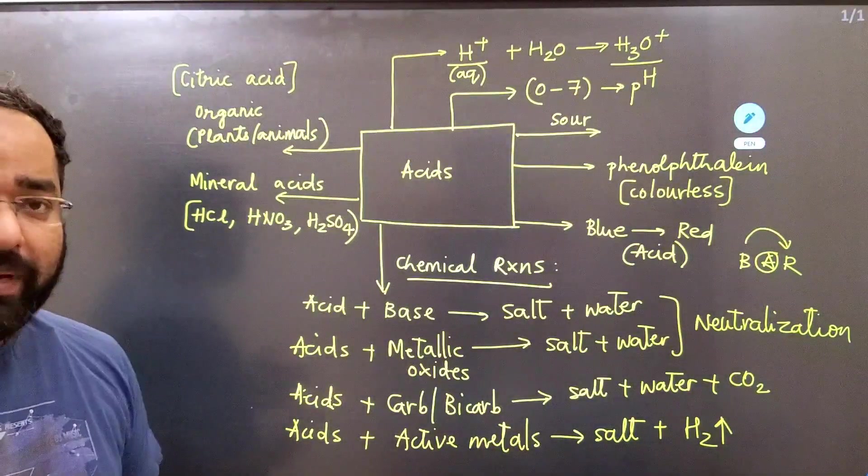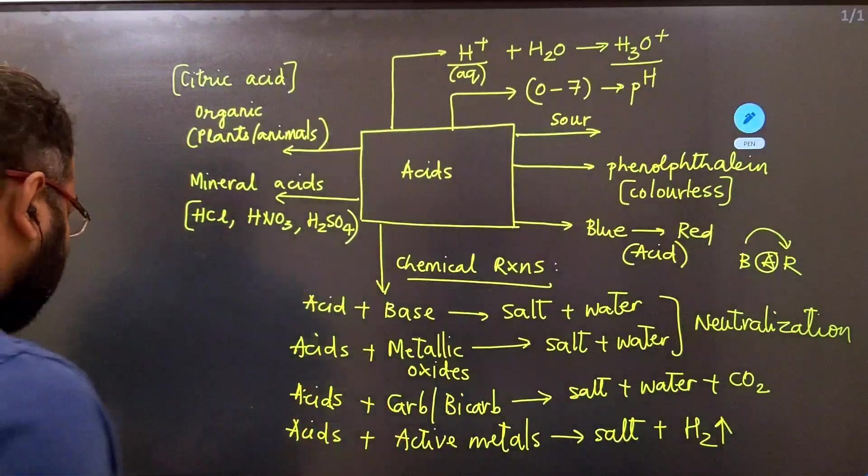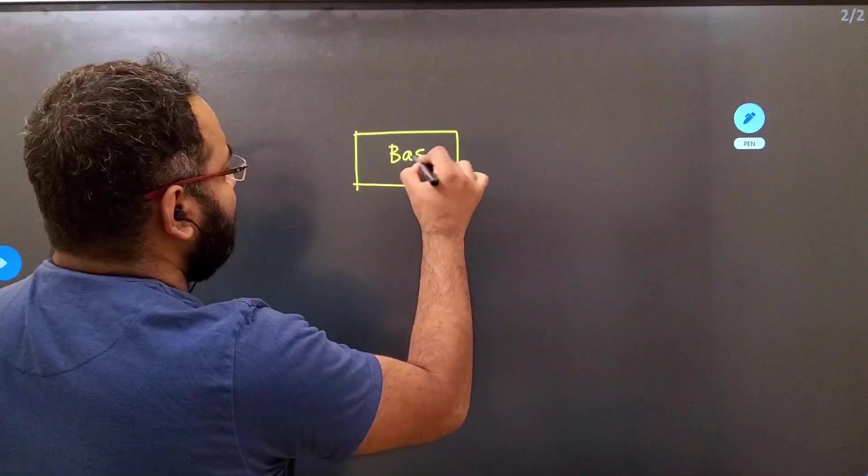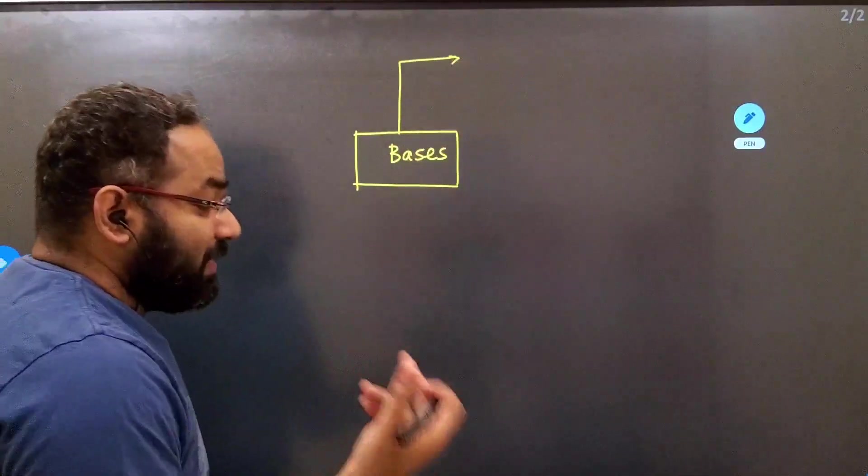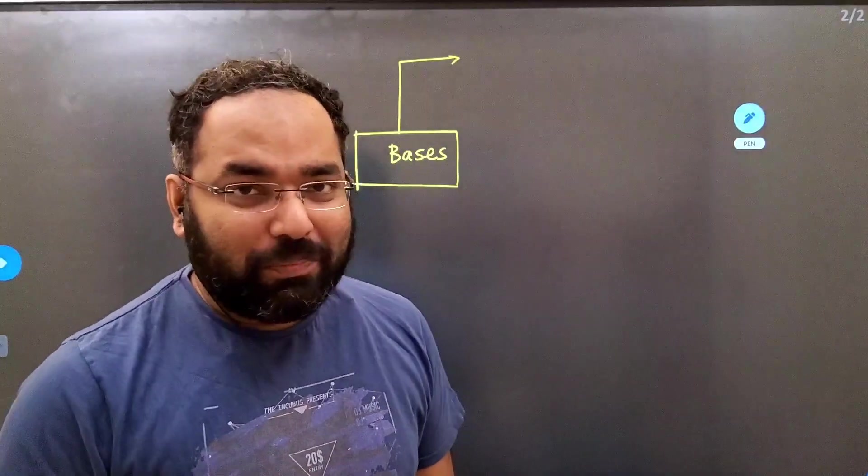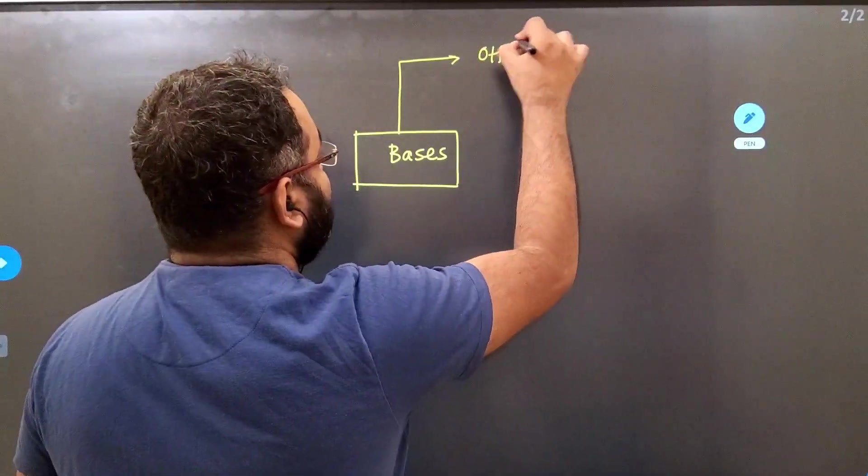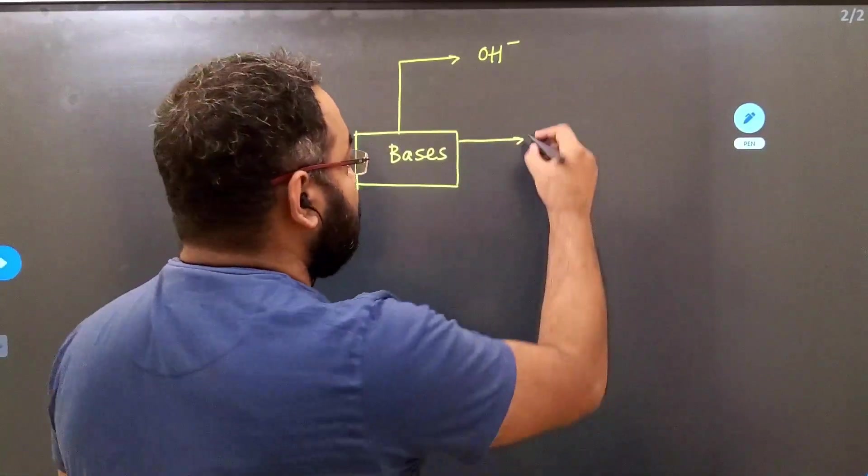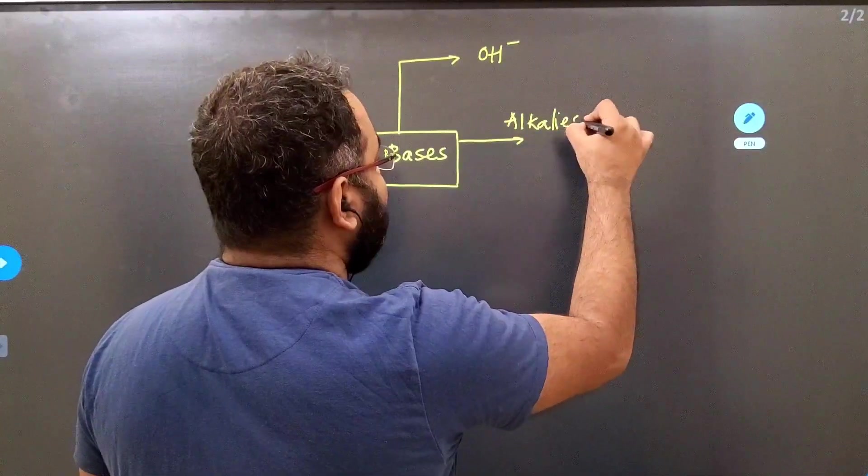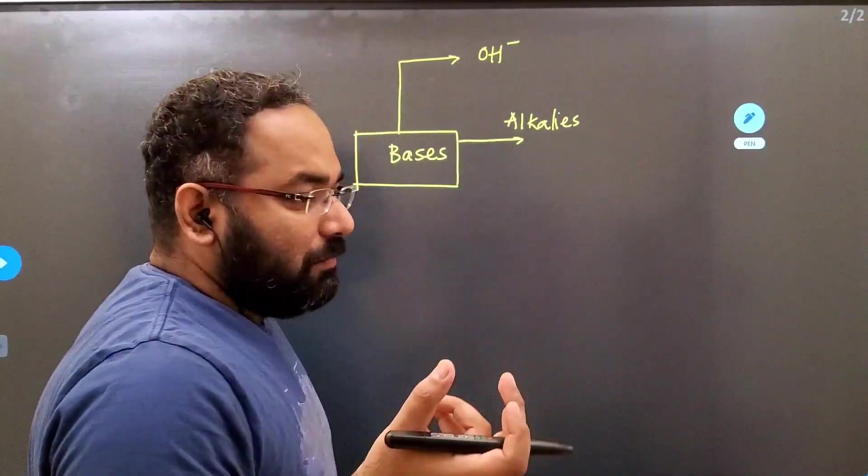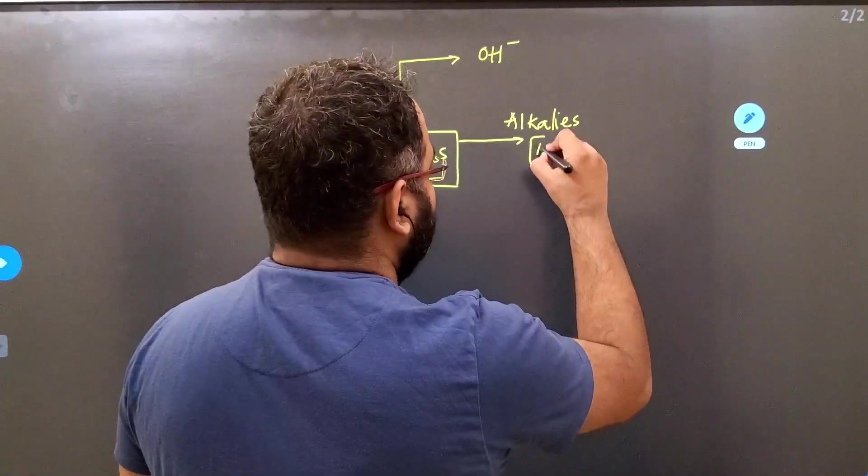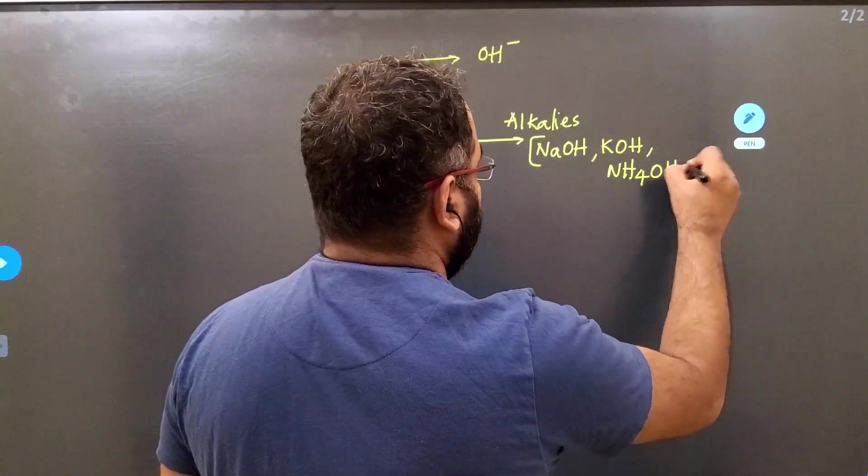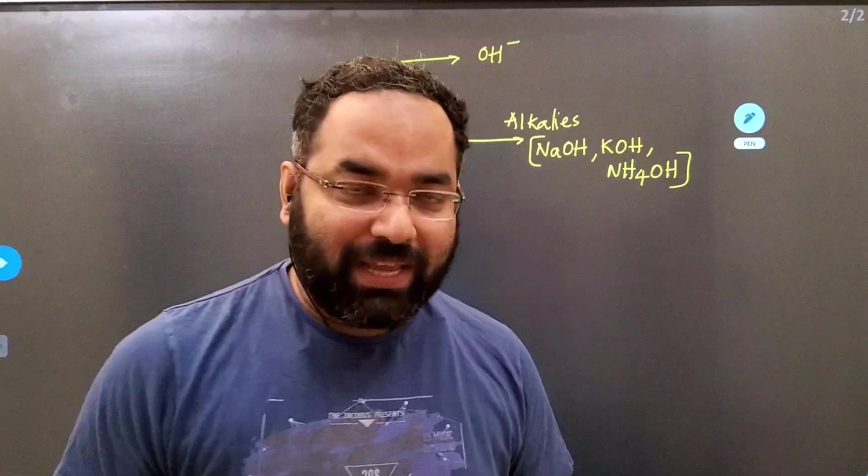Let us also move into the next part of the chapter which are bases. When we talk about bases, let us summarize bases just like the way we summarized acids. We say for acids you need H+ or H3O+ in solutions. For bases, you need OH- ions in solutions. Apart from that, there are certain bases that are water soluble. These water soluble bases are called alkalis. And if anybody asks you to remember a few alkalis, please remember these three: sodium hydroxide, potassium hydroxide, and ammonium hydroxide. These would be the best examples for alkalis.